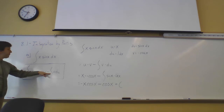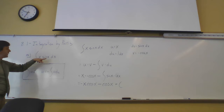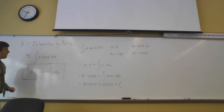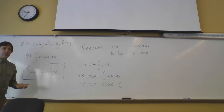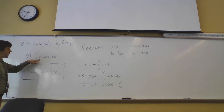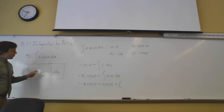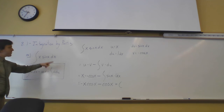We want to pick something for dv that has a very easy anti-derivative, because we just have v sitting on the other side of the formula. In this case, either x or sin(x) would make a good choice since they both have simple anti-derivatives, but only one of them is going to make this integral look really nice.